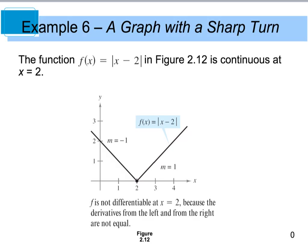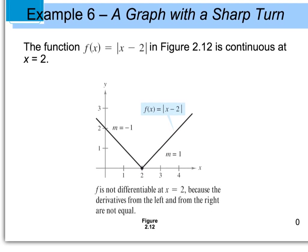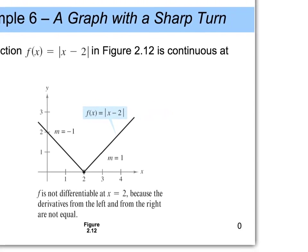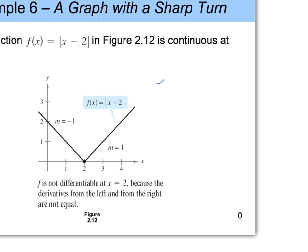When we take the limit as x approaches 2 from the left of the absolute value of x minus 2, we're going to see that the slope, which is really your derivative, is going to equal a negative 1 value. So as you're coming in from this direction, we're going to get a negative 1.